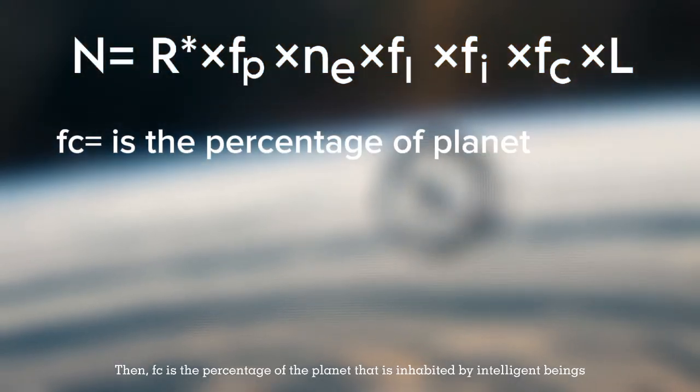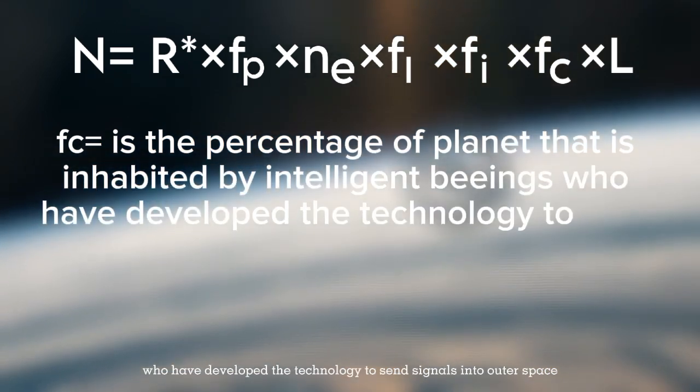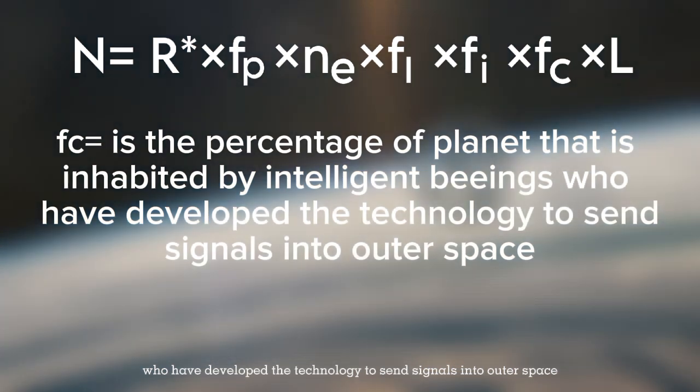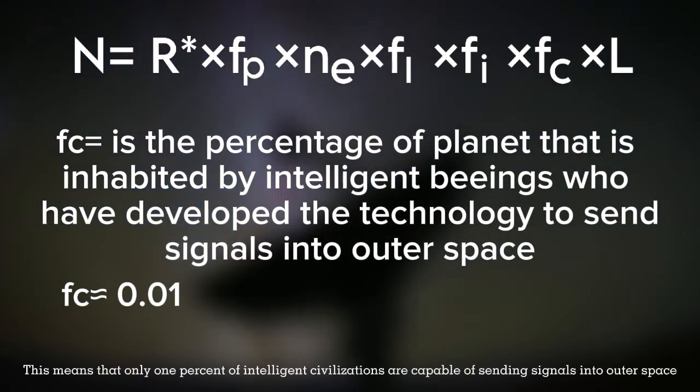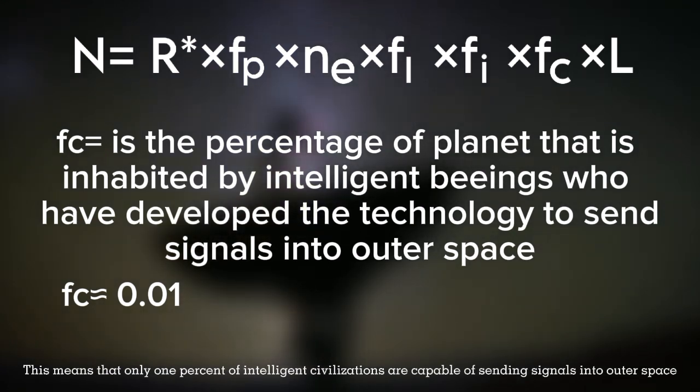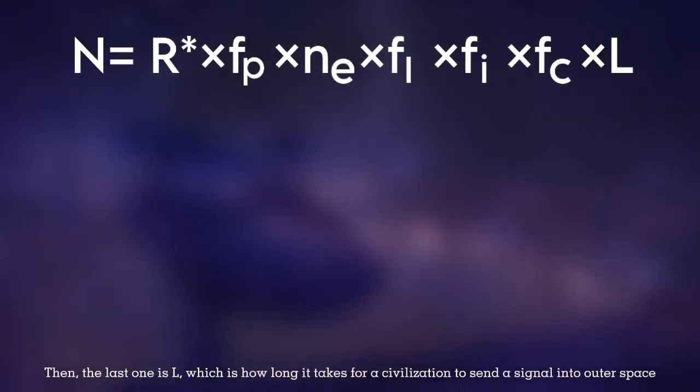Then, fc is the percentage of the planet that is inhabited by intelligent beings who have developed the technology to send signals into outer space. The estimate for the fc value is 1%. This means that only 1% of intelligent civilizations are capable of sending signals into outer space.